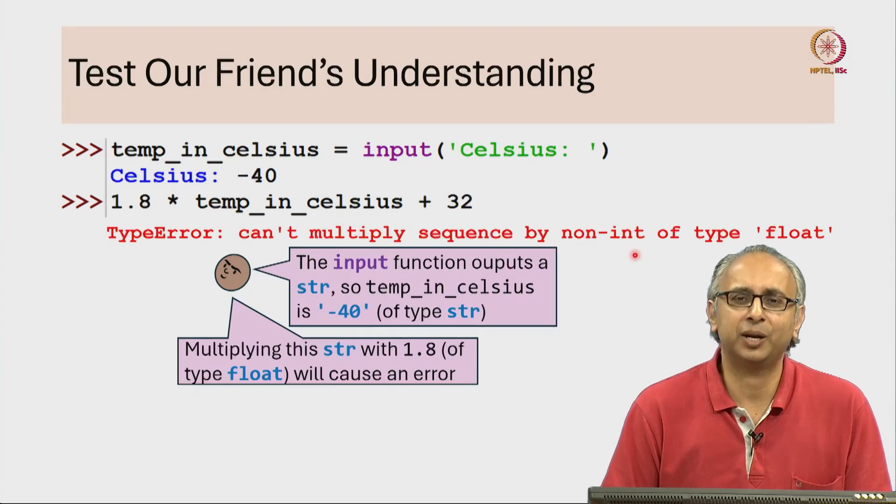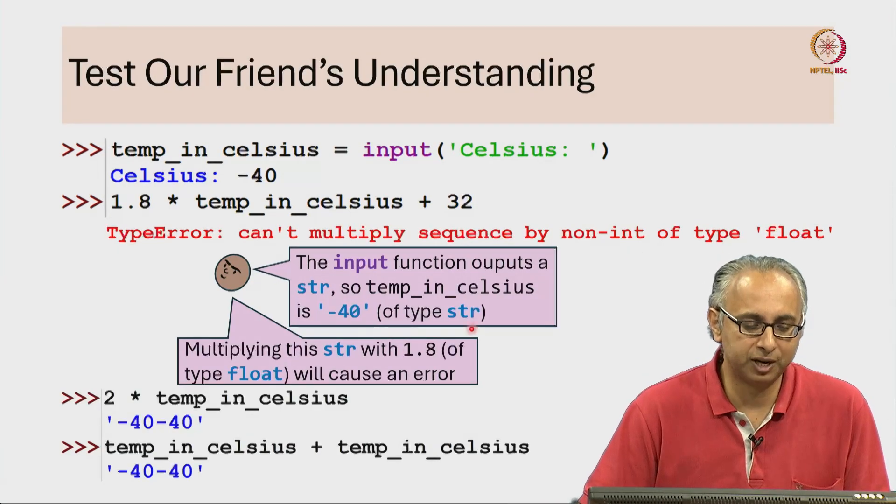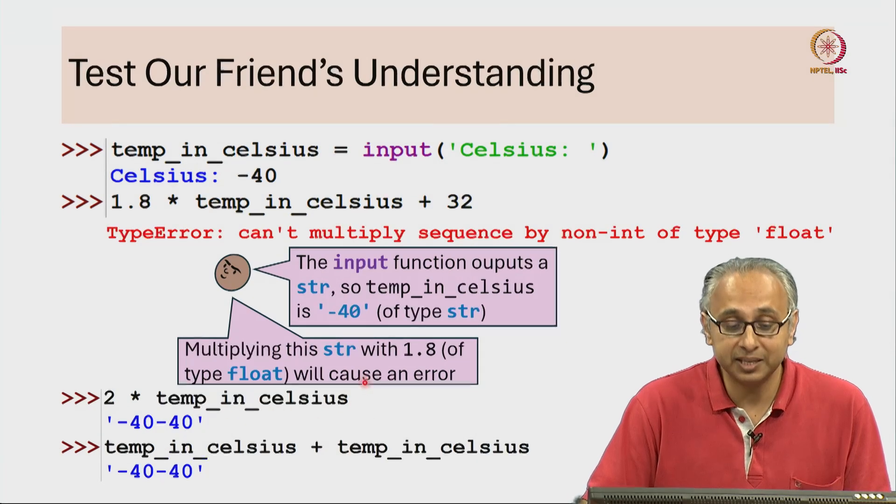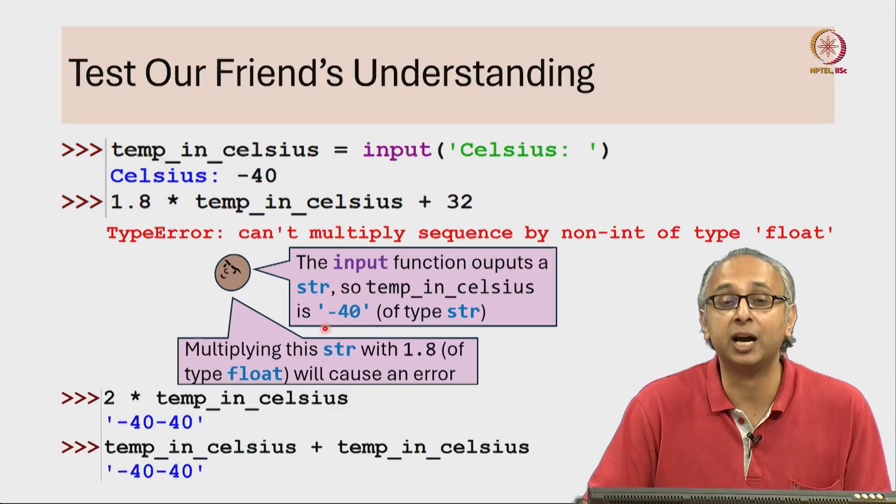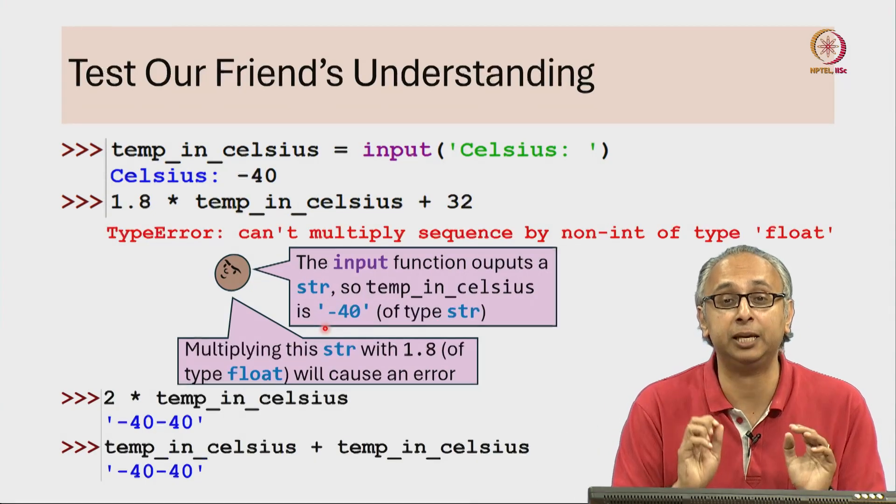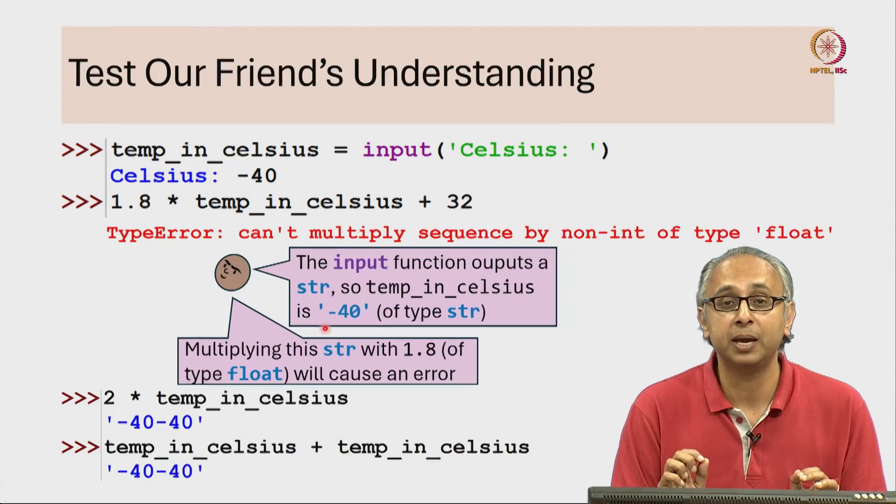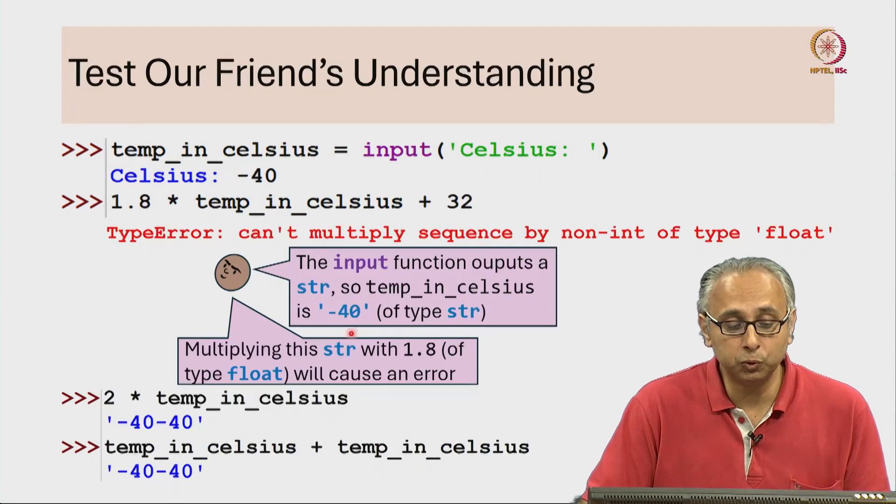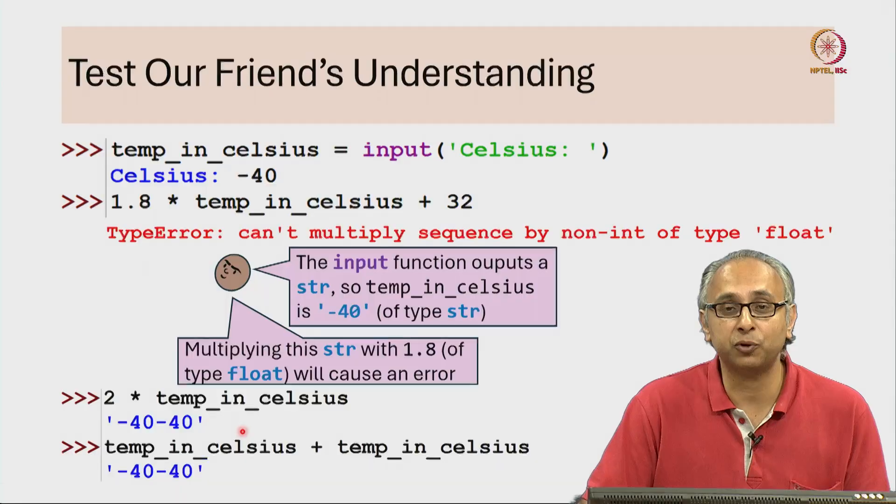It turns out you can. As an experiment, our friend has tried multiplying 2 times temp_in_celsius. Remember, temp_in_celsius is the string '-40'. Our friend was absolutely correct about that, and multiplying that string by 2 results in the string '-40-40'.